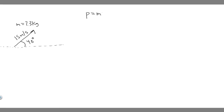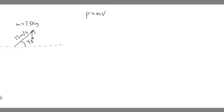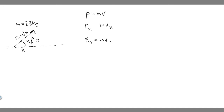Momentum equals mass times velocity. We're trying to find the horizontal and vertical components — right now we just have this vector, but we want to find the x and y components. We find the momentum in the x and in the y by taking the mass, which is the same in both, and multiplying by the velocity in x and velocity in y respectively.